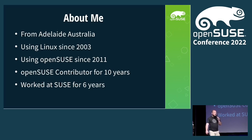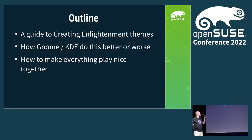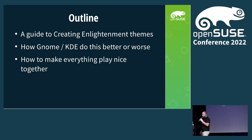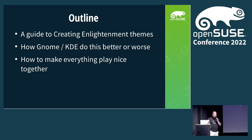SUSE is always hiring, there's probably jobs going for people. As a bit of a guide for where we're going today: we're going to have a quick guide on how to create Enlightenment themes better, we're going to look at how GNOME and KDE do this, and then I've got a couple of tricks for making your KDE apps look nice on GNOME and your GNOME apps look nice on KDE, because as someone who uses a small desktop, you get to fight those things all the time.